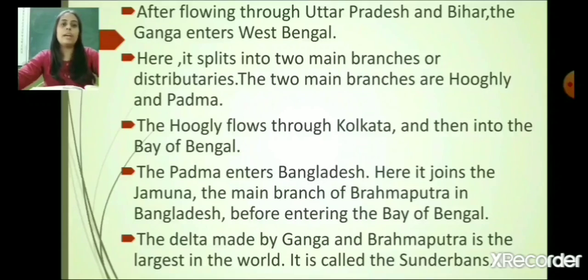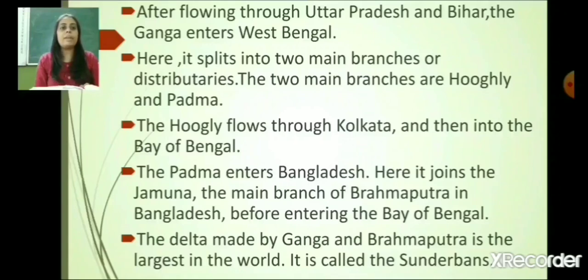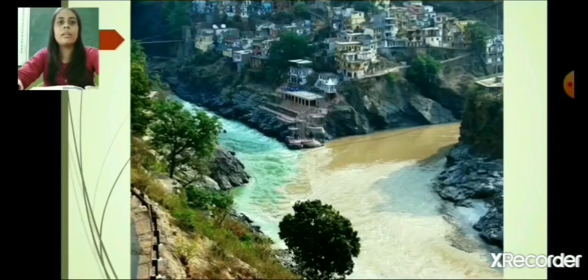Before entering into the Bay of Bengal, in Bangladesh, the Jamuna joins the Padma. The delta made by the Ganga and Brahmaputra is the largest in the world and it is called the Sundarbans. These distributaries branch off from the main rivers Ganga and Brahmaputra, forming this triangular-shaped delta.